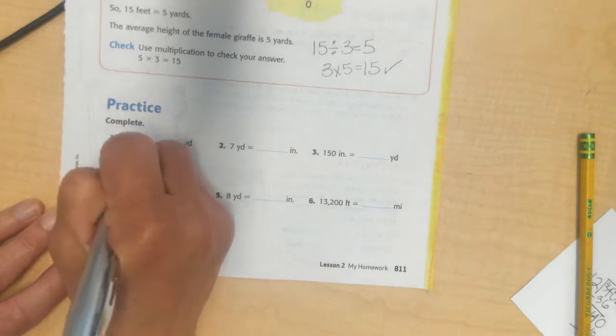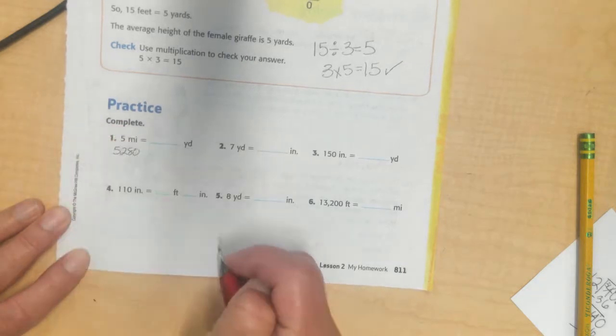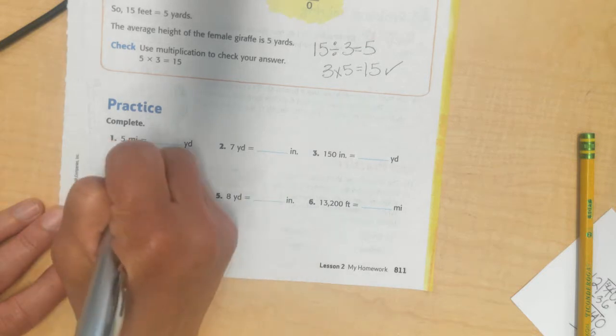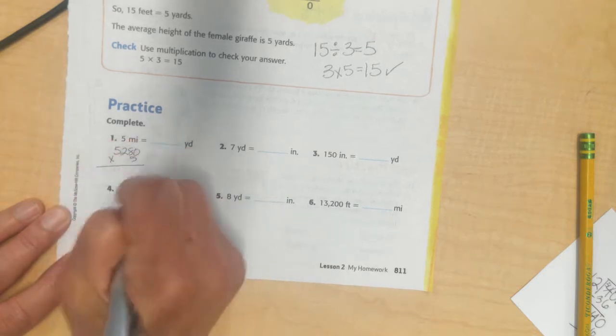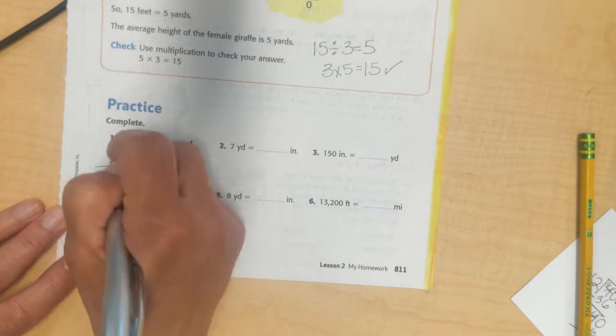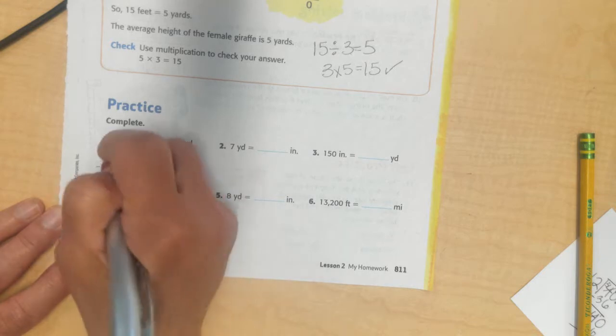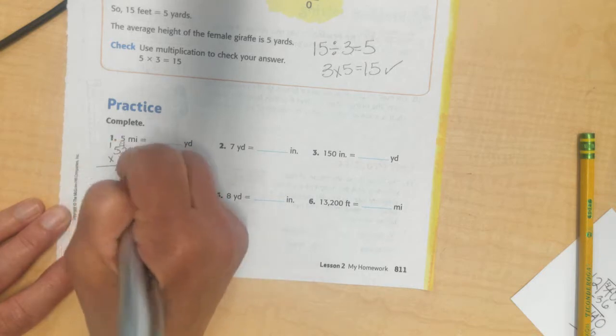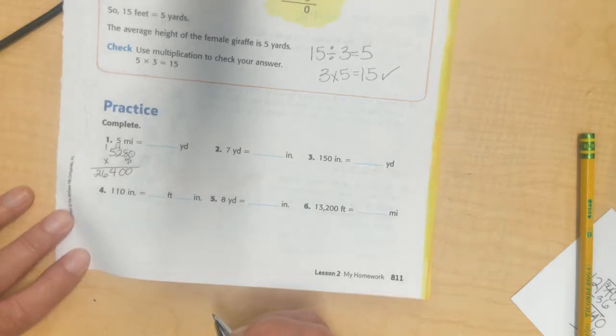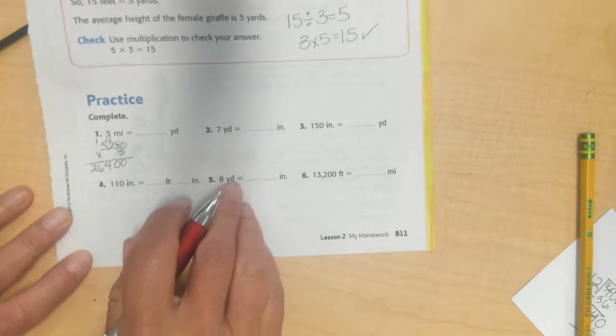First thing first, I'm going to take my 5 miles and figure out how many feet that is. I know there's 5,280 feet in one mile. So, in 5 miles, I could add 5,280 five times or I could just multiply times 5. 0 times 5 is 0. 8 times 5 is 40. I put my 0, I carry my 4. 5 times 2 is 10 plus 4 is 14.